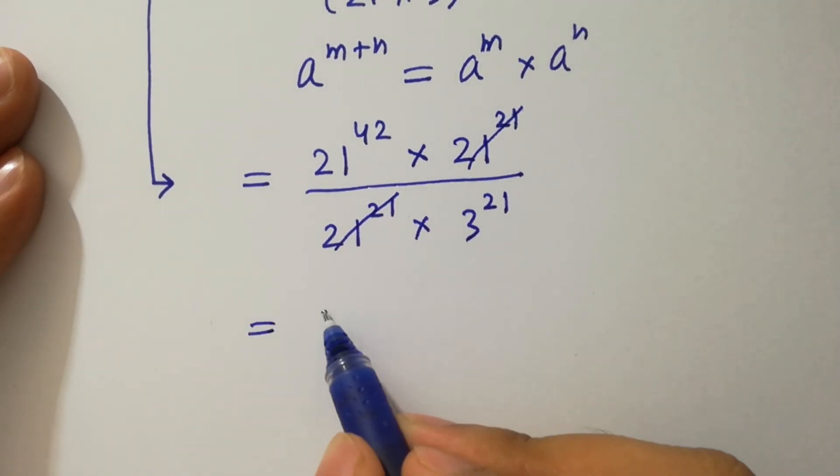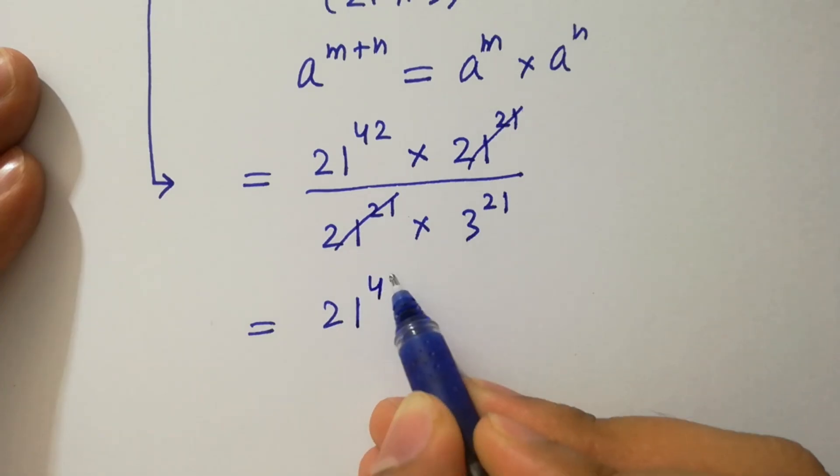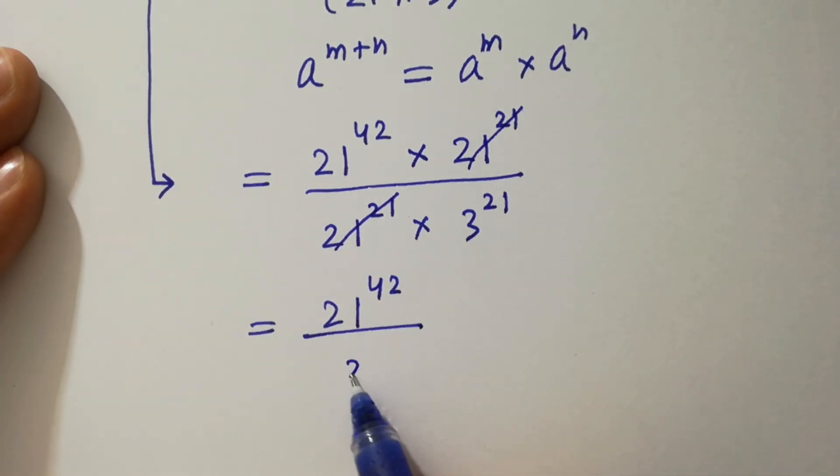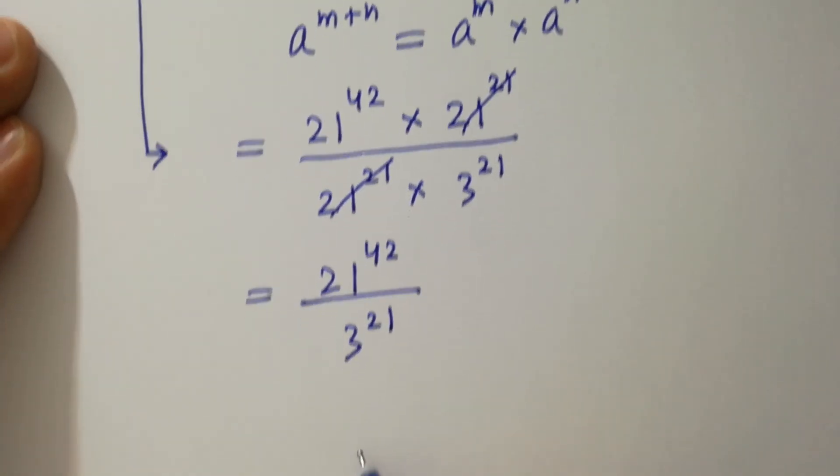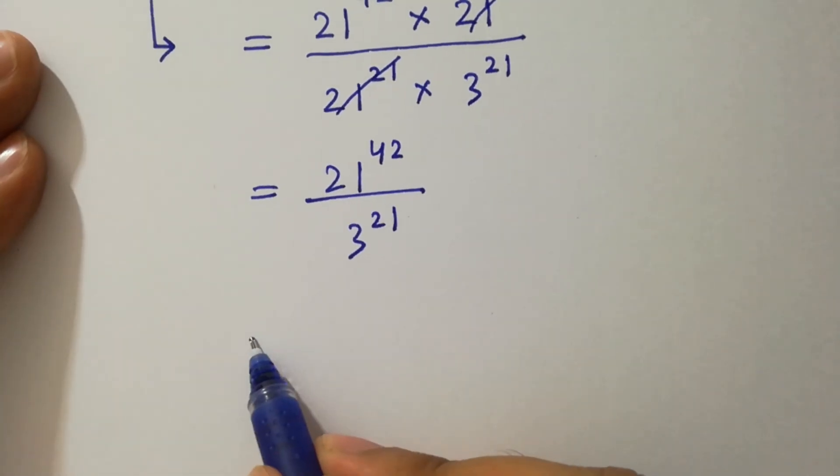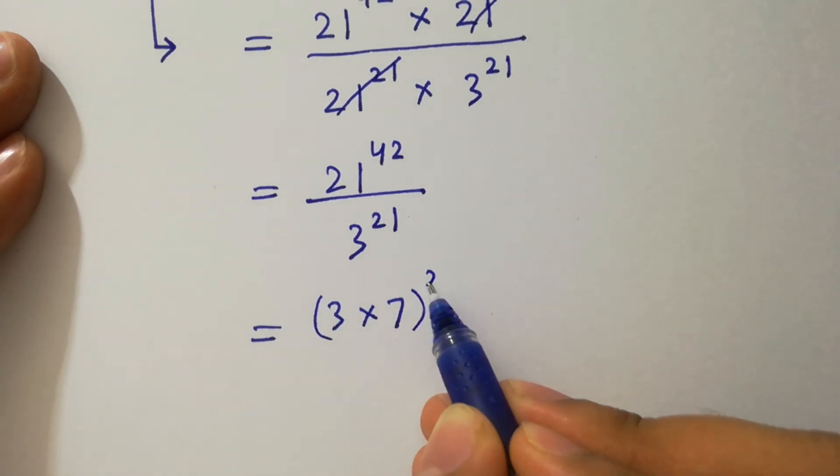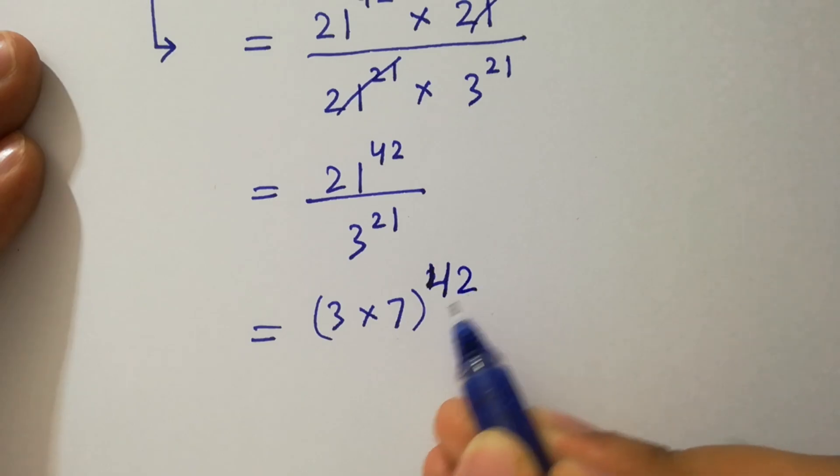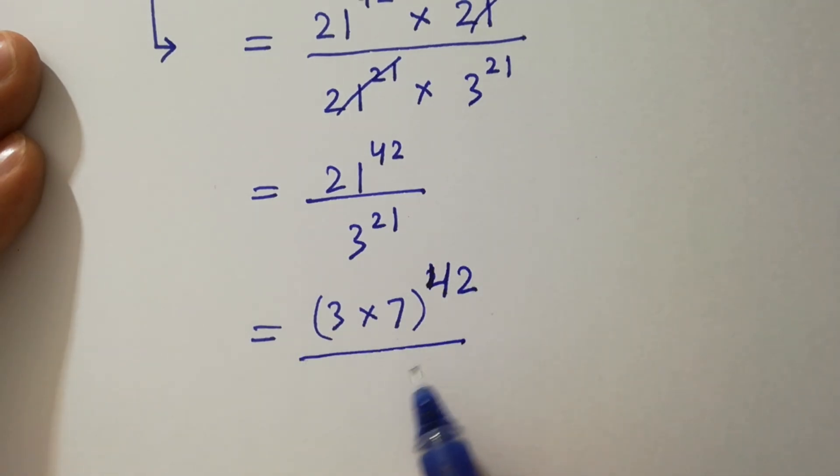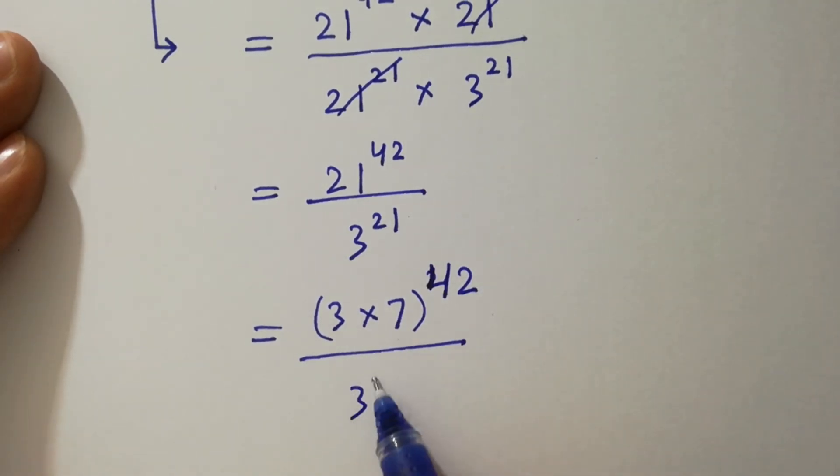We have 21 to the power 42 over 3 to the power 21. As 3 times 7 is 21 to the power 42 as it is over 3 to the power 21 as it is.